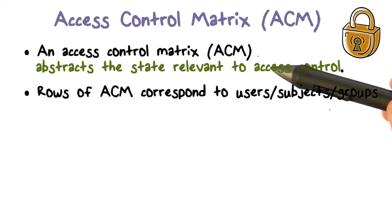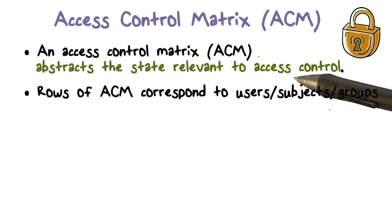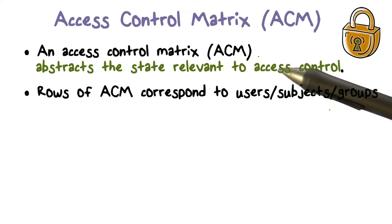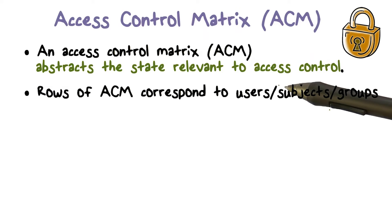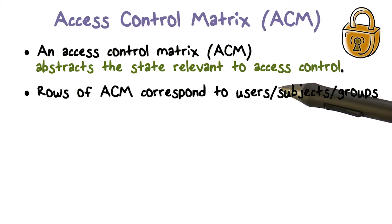This access control matrix is going to abstract all the state that is relevant for making those access control decisions. Matrices have rows and columns. To define a matrix, you have to say what rows it has, what kind of columns it has, and what it stores in each element or each cell of the matrix.